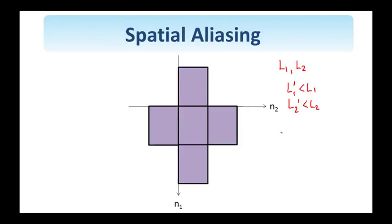aliasing is going to take place. So, the resulting image, which has size L2 prime, L1 prime,